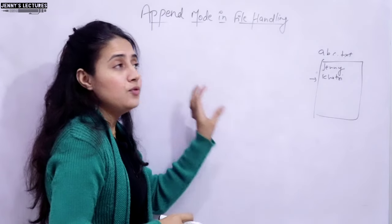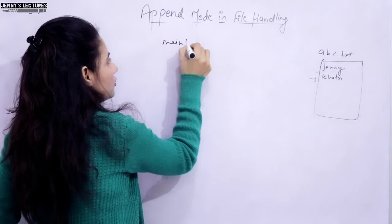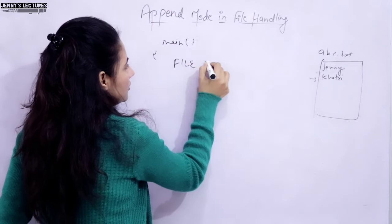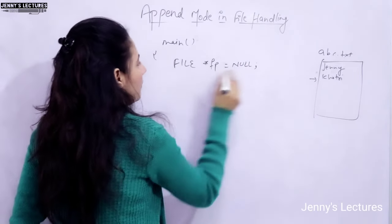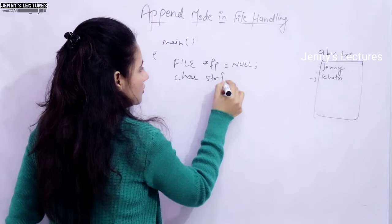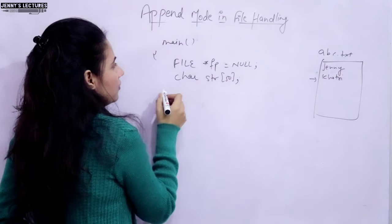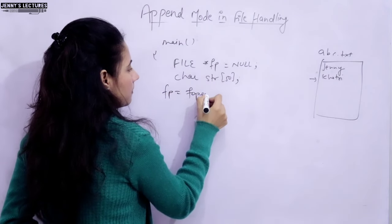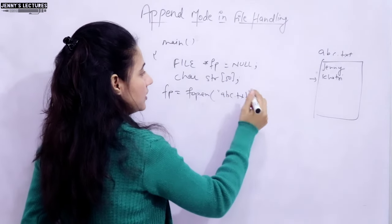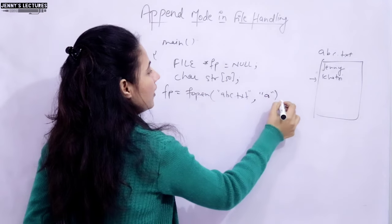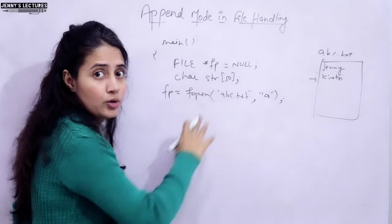I'll show you through a program. In the main function, first we create a file pointer initialized to null. We take a string buffer of length 50 to hold what we want to append. Then we open the file using fopen with the filename abc.txt — or the complete path if the file is in a different directory — and open it in append mode 'a'.